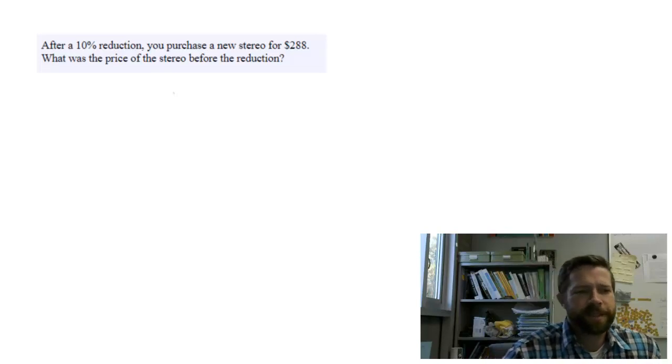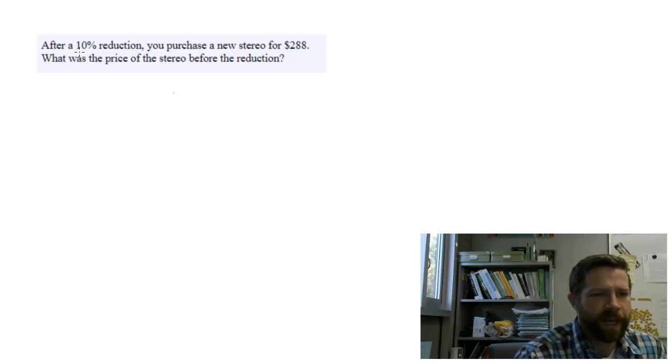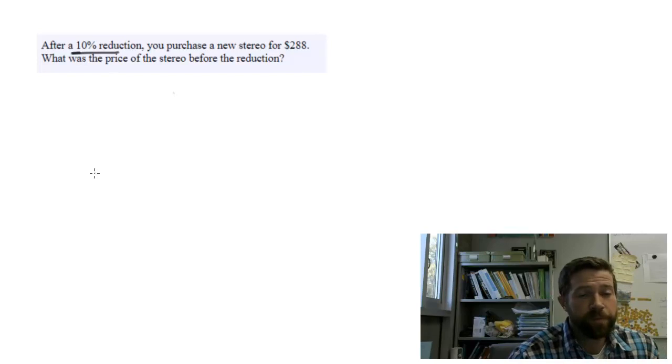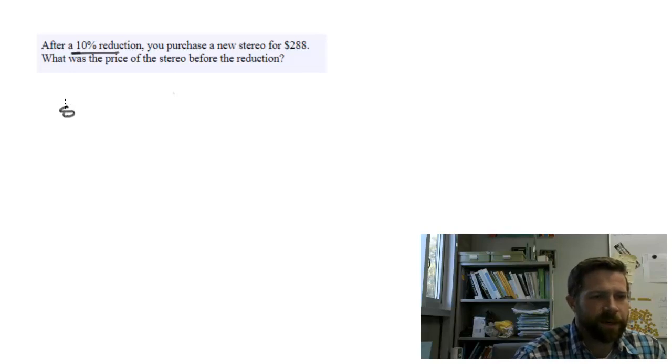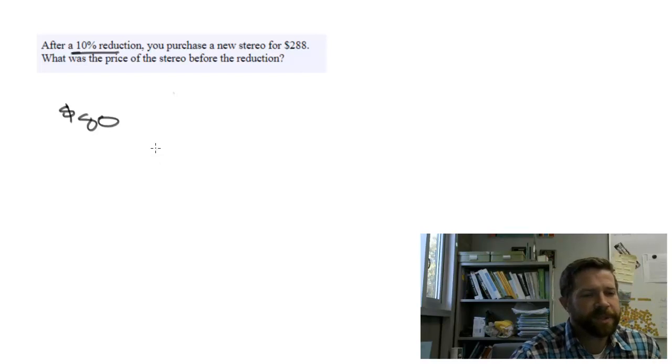Let's talk about this 10% reduction and how you would do this. There are two basic ways to apply a 10% reduction. Let's consider an $80 item instead of this situation. The first way we usually learn to take 10% off is to find 10% of 80 and subtract that from 80.